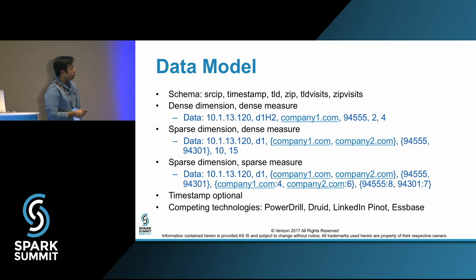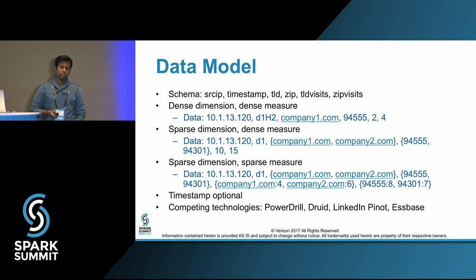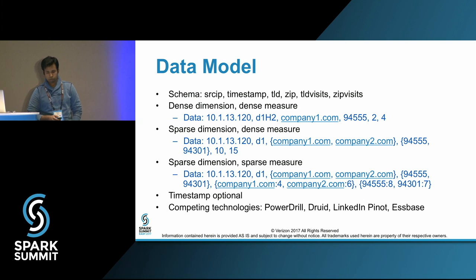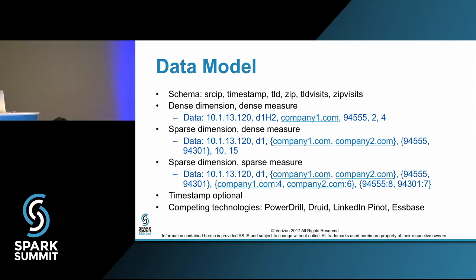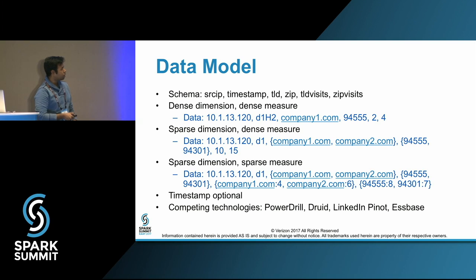Going into OLAP terminology: this dataset can have dense dimension with dense measure, sparse dimension with sparse measure, or sparse dimension with dense measure. For example, you have two companies like coles.com and macys.com — they are sparse in the dimension — and we know that on a given day this source IP went to these two websites and downloaded 10 bytes.